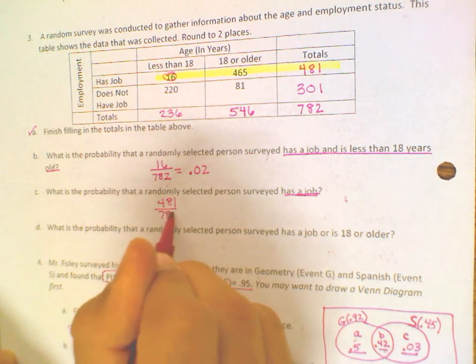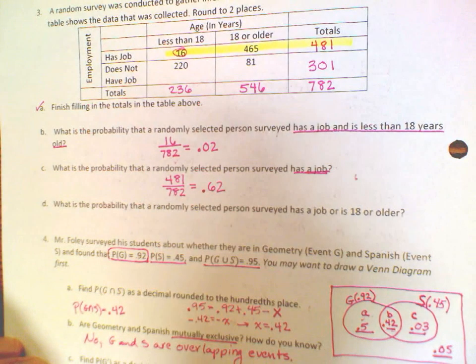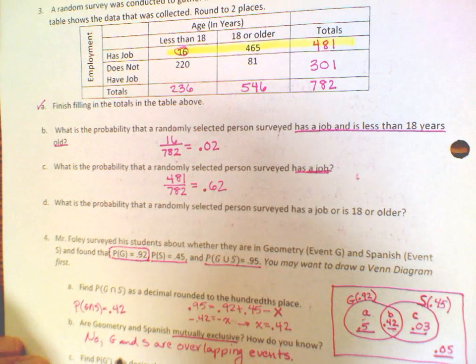So 481 out of 782. And the percentage for that is 0.62, or 62% of the population has a job.